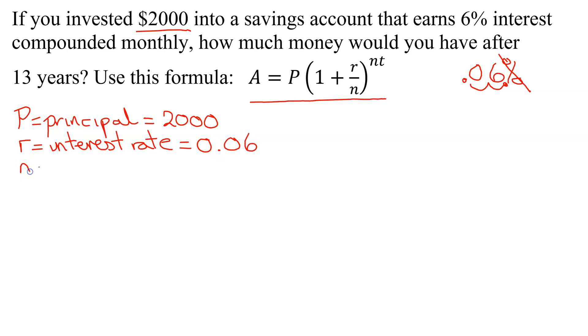Next is N. N is the number of times you compound per year. And in this case, we're told that you compound monthly. So N is 12.